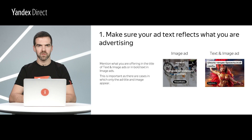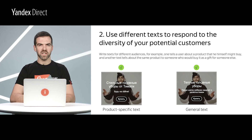Make sure your ad text reflects what you are advertising. Mention what you are offering in the title of text and image ads, or in bold text in image ads. This is important as there are cases in which only the ad title and image appear. Make sure that the ad title provides information about the product or service being advertised. Adapt your ad texts for different audiences. You can use the same creative with different texts to target different audiences. Once you segment your audience, you should write separate ad texts for each of them and set bids for them.